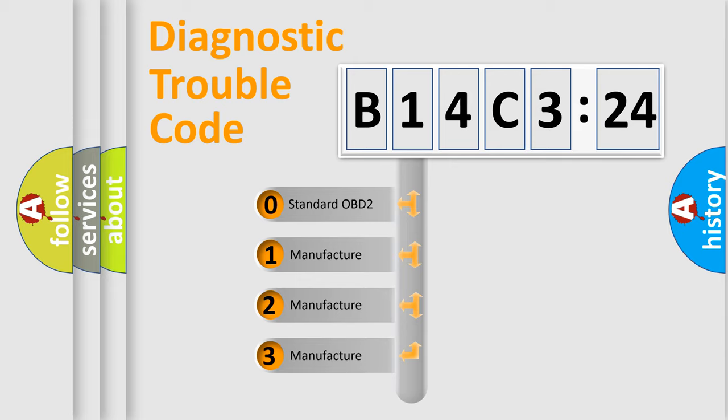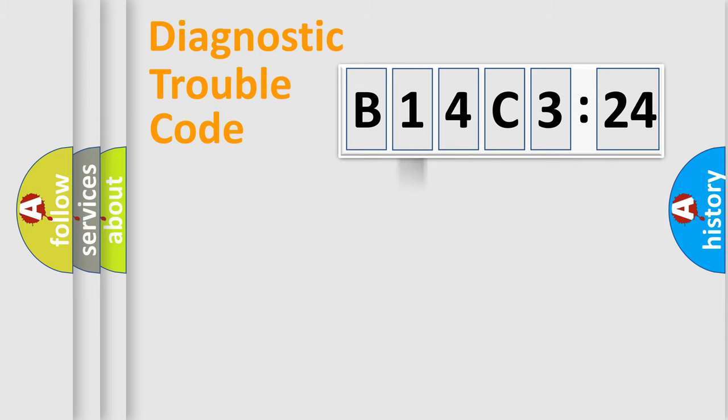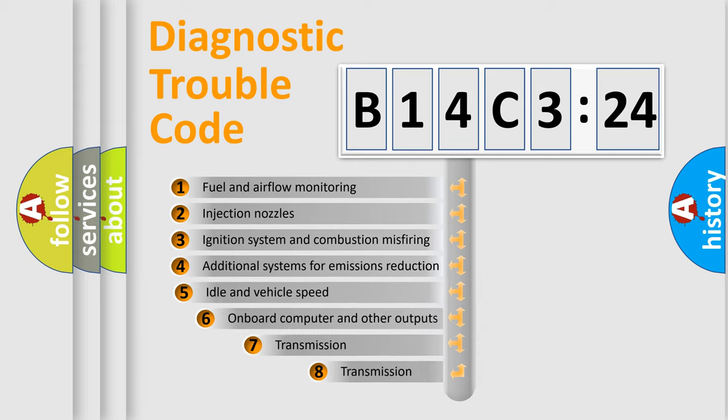If the second character is expressed as zero, it is a standardized error. In the case of numbers 1, 2, or 3, it is a more prestigious expression of the car-specific error.